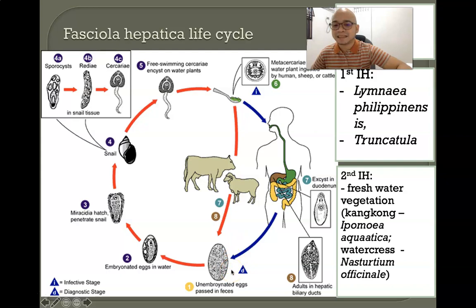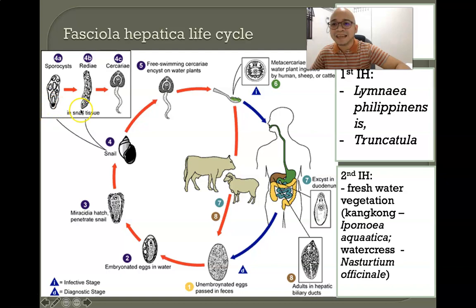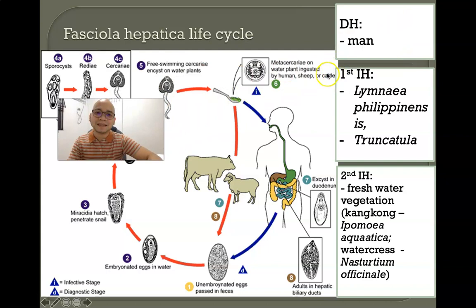Once the unembryonated egg comes into contact with water, it becomes embryonated and the miracidium hatches and swims until it reaches the snail. Inside the snail, the intramolluscan stages occur — sporocyst, redia, and cercaria. The cercaria then swims and encysts on aquatic vegetation as metacercaria.